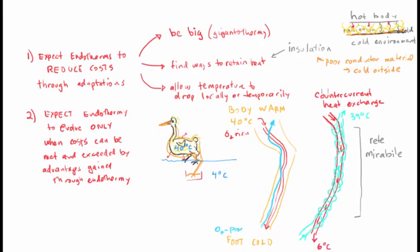We can call counter-current heat exchange both a mechanism to allow animals to retain heat. It's also doing this other thing. It's also allowing animals to locally drop their body temperature which results in less heat loss.